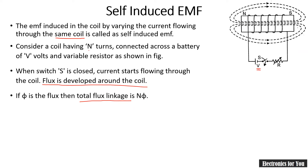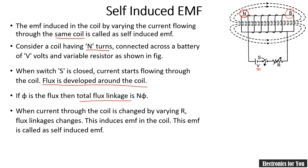If Φ is the flux, then total flux linkage equals N times Φ, where N is the number of turns. A north and south pole is generated due to the EMF induced in the coil. When the current through the coil is changed by varying the resistor R, the flux linkages also change and the EMF induced is called self-induced EMF — because the current through the coil changes, and as per Faraday's law of electromagnetic induction, if the magnetic field changes then EMF is induced.